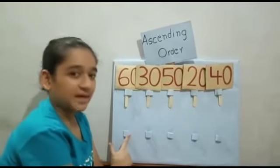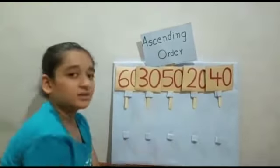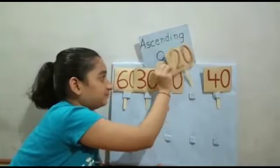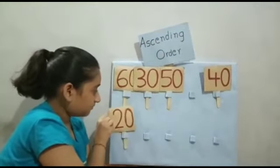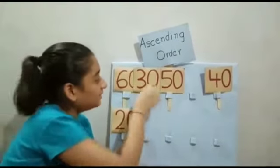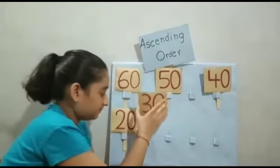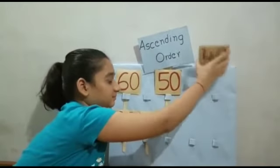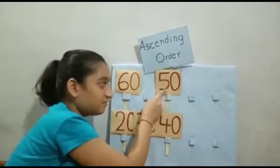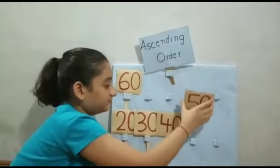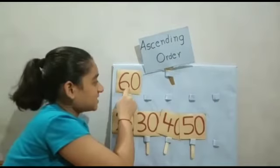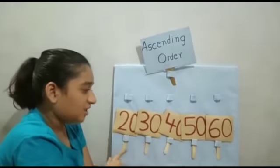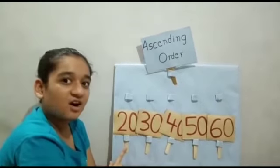We have to keep them in ascending order. Which number comes first? 20. Then, 30. Then, 40. Then, 50. Then, 60. These numbers are all in ascending order.